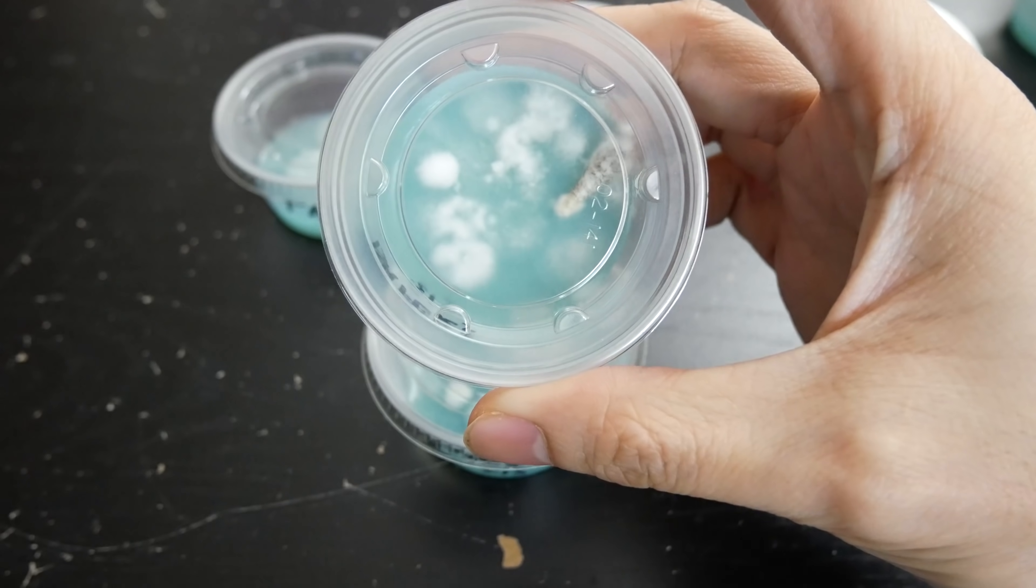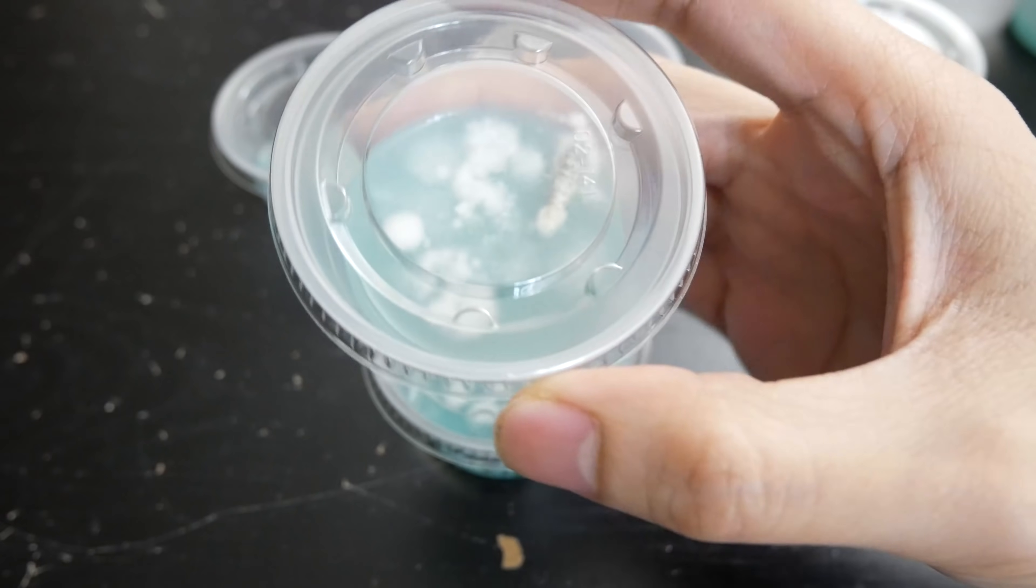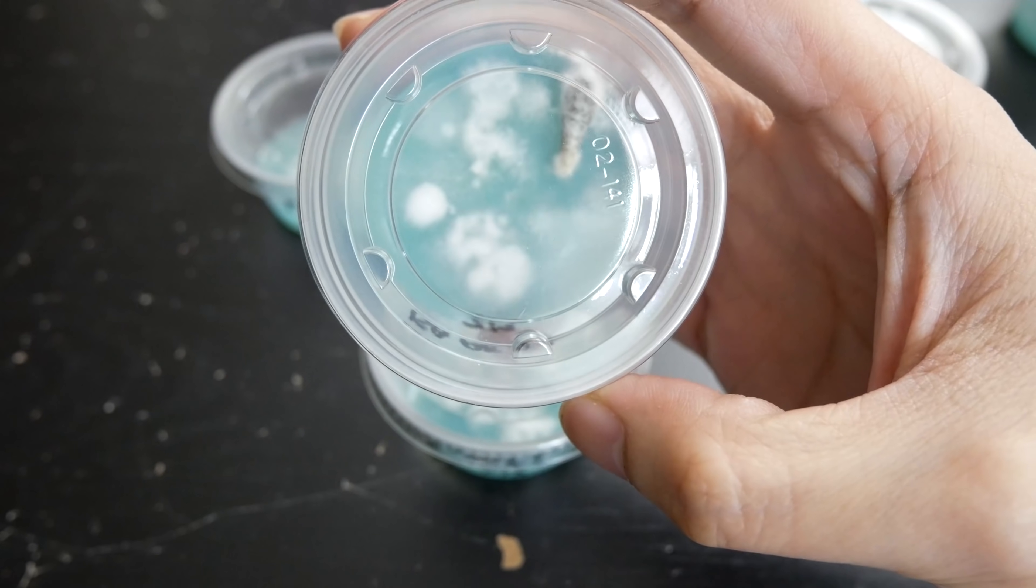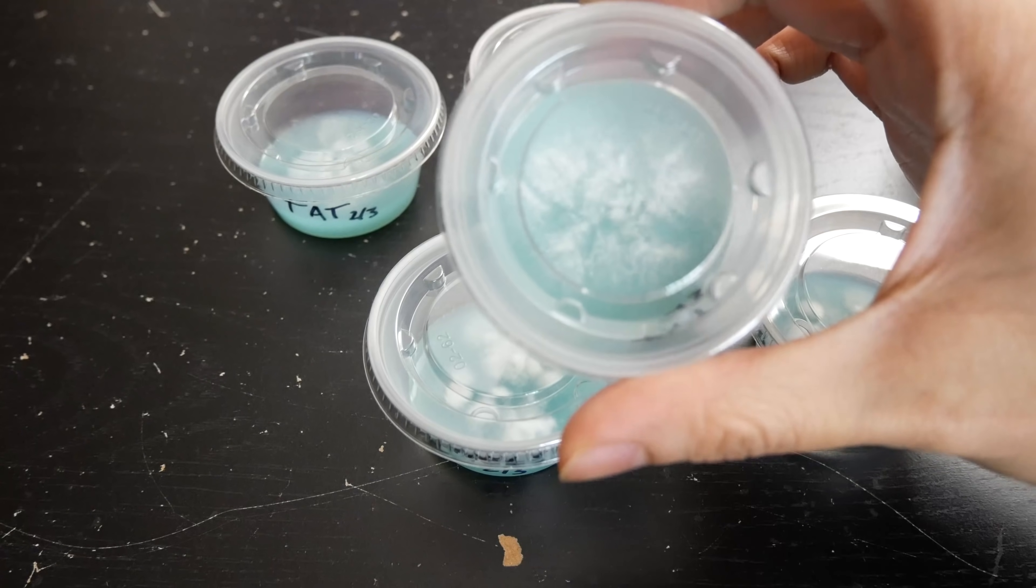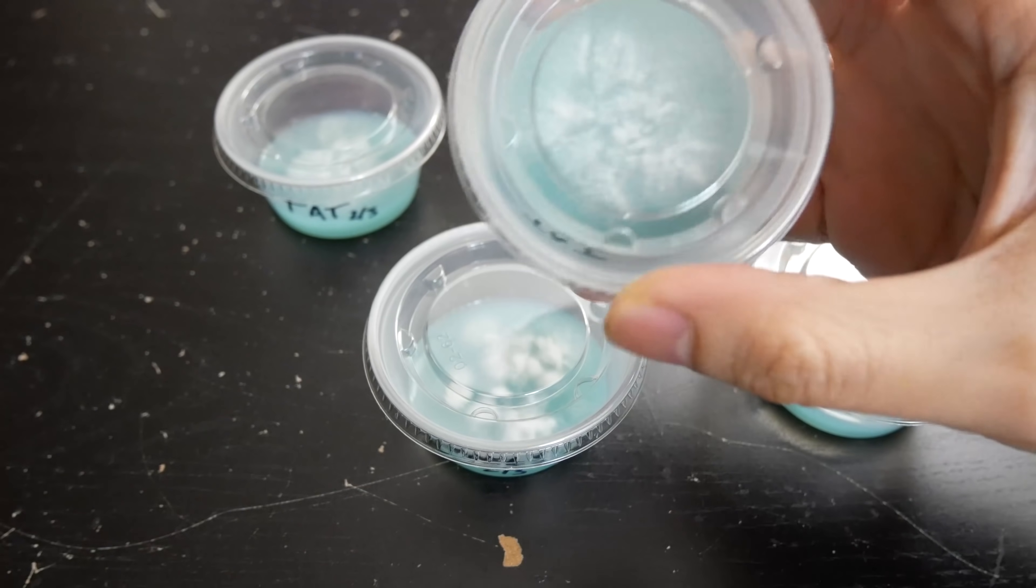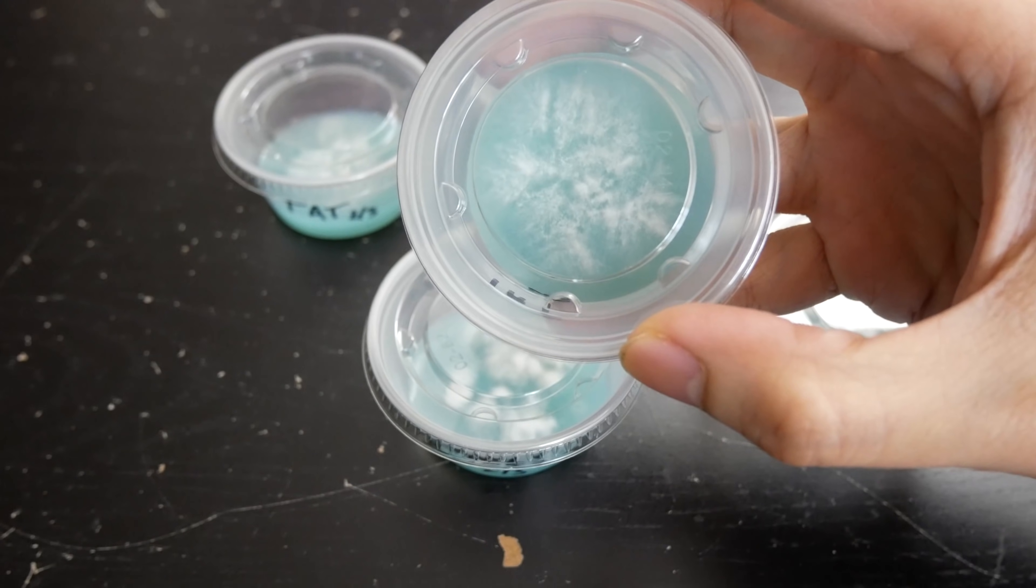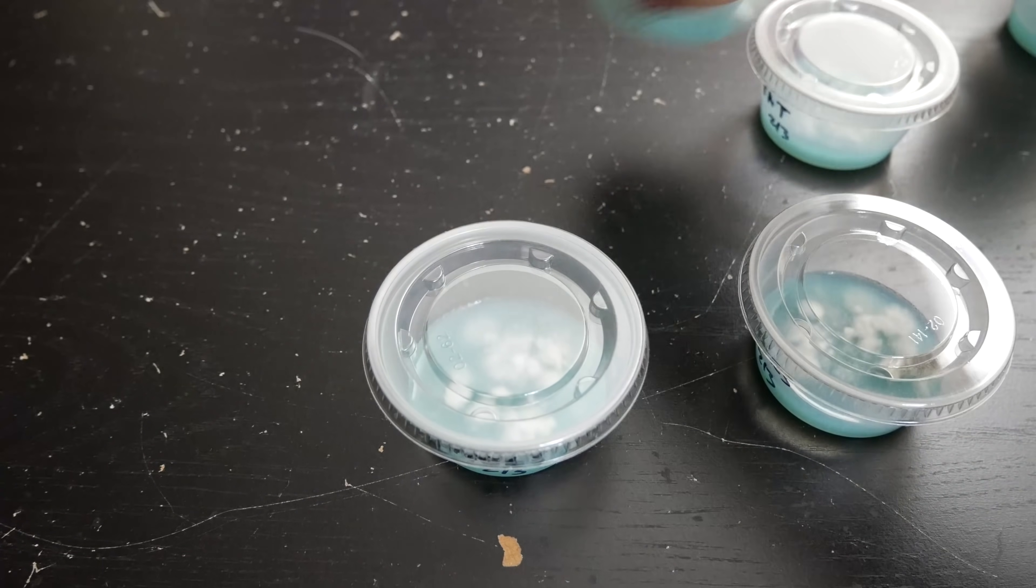So once you get them growing, pretty much a good sign that you got some mycelium on there that's colonizing, you want to start making transfers out of these and transfer them to new agar cups to colonize. Now these look pretty clean so far. However, sometimes you might get some contamination or bacteria that might be underlying and hasn't germinated yet. So it's always a good practice to make transfers and clean up your cultures on new agar dishes before you inoculate them into grain.